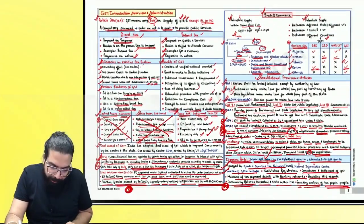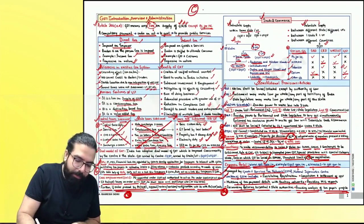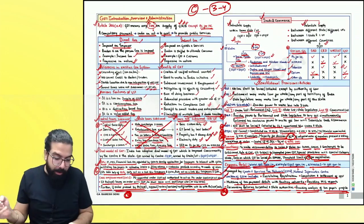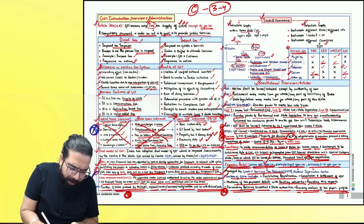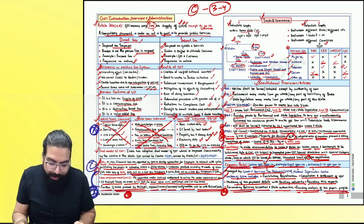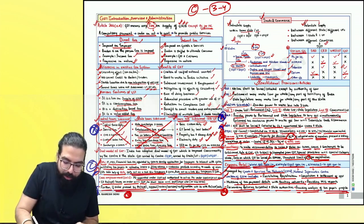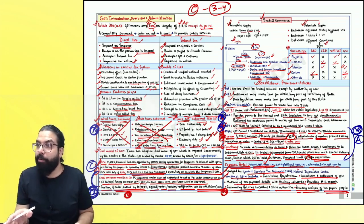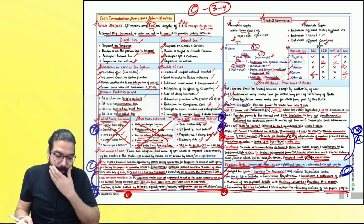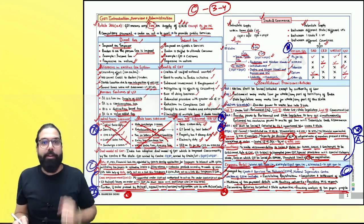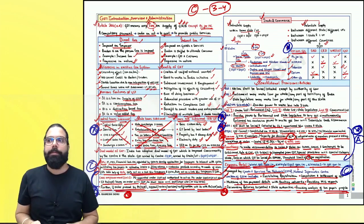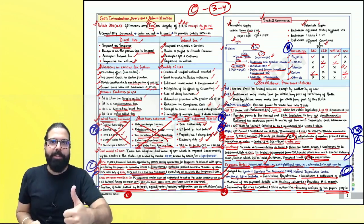We are done with Chapter 1 — congratulations! This is a C-graded chapter with three to four marks maximum expected. Important points: taxes subsumed/not subsumed (one mark MCQ); Article 279A on the GST Council (A-graded question from a C-graded chapter); Article 246A and 269A; dual model; common portals; cross empowerment (A-graded question); and the various goods and services tax table (one mark possible). That completes the revision of Chapter 1.